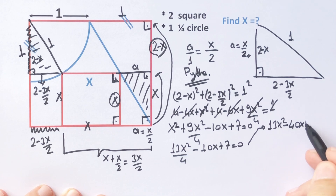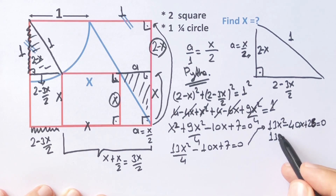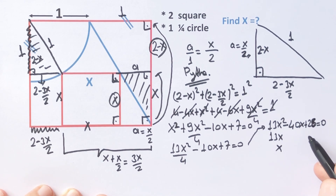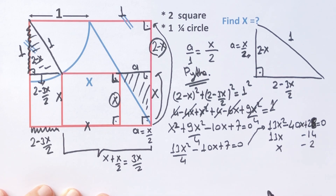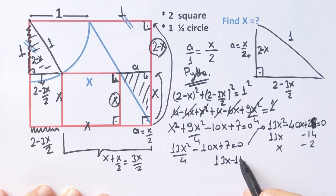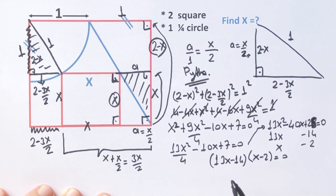Continuing, we get 13x squared minus 40x plus 28 equals zero. We can factor this as 13x squared equals 13x times x, and 28 equals negative 14 times negative 2. Therefore, 13x minus 14 times x minus 2 equals zero.